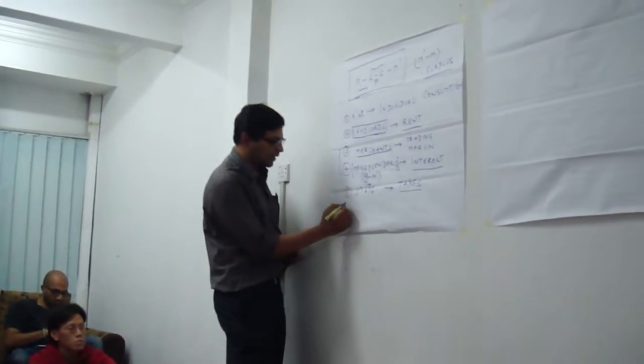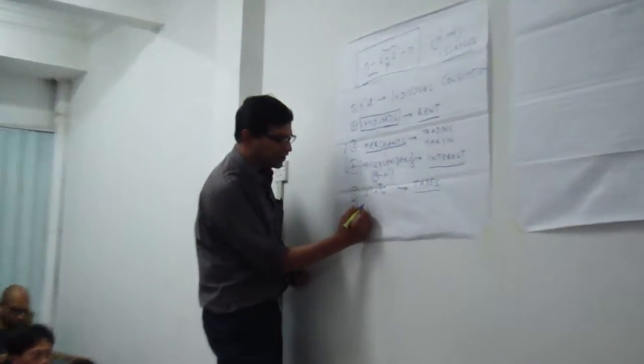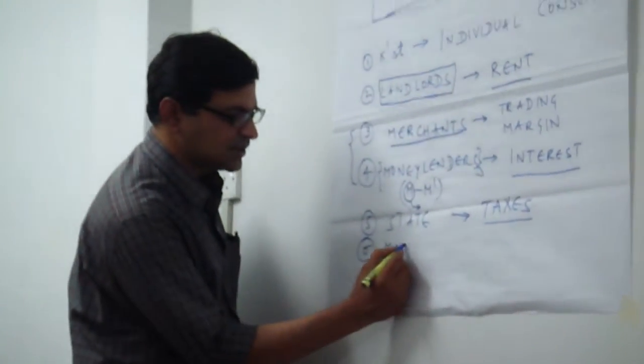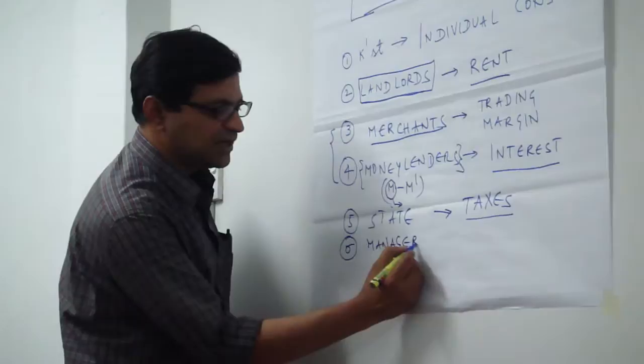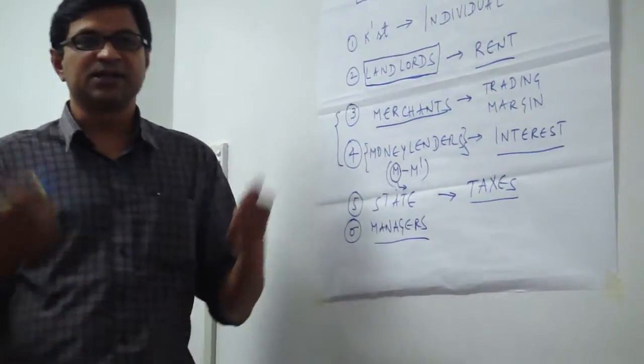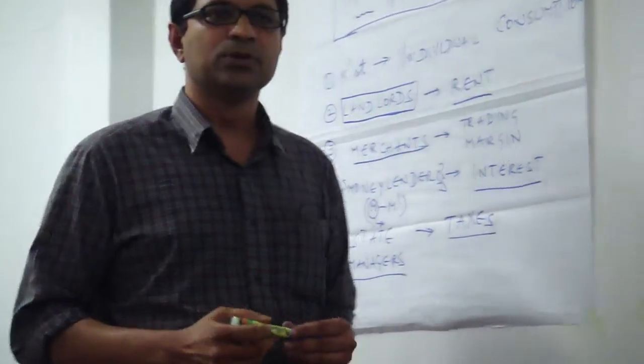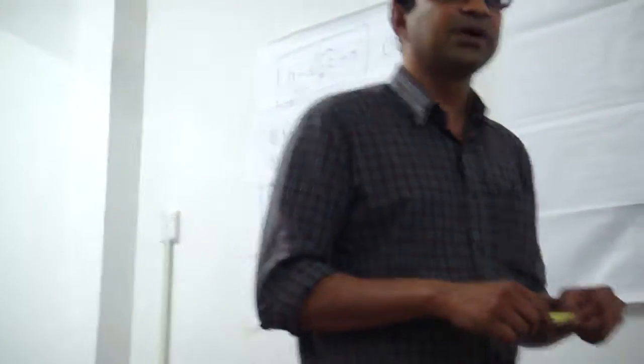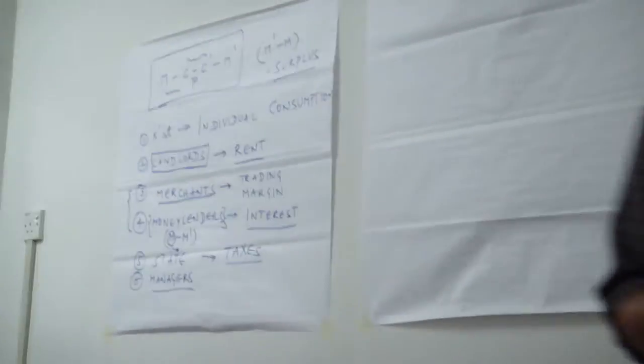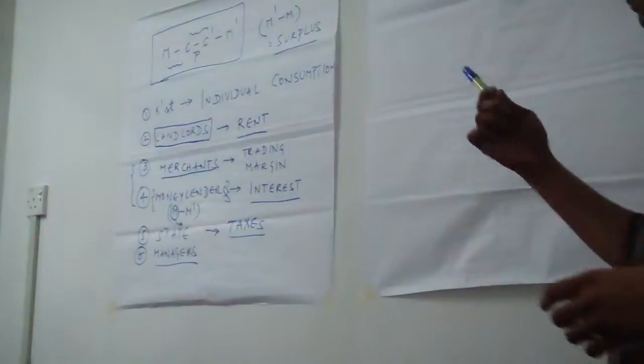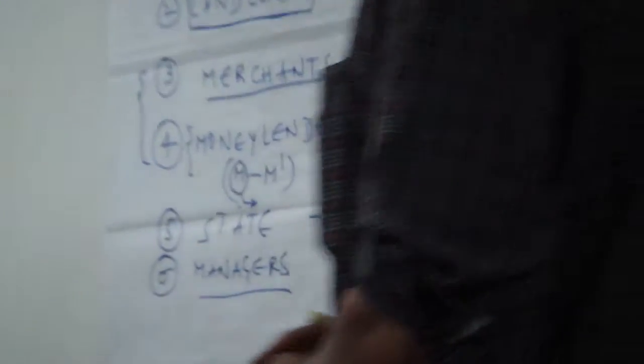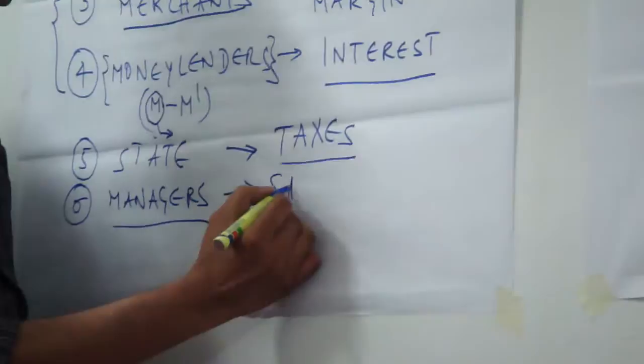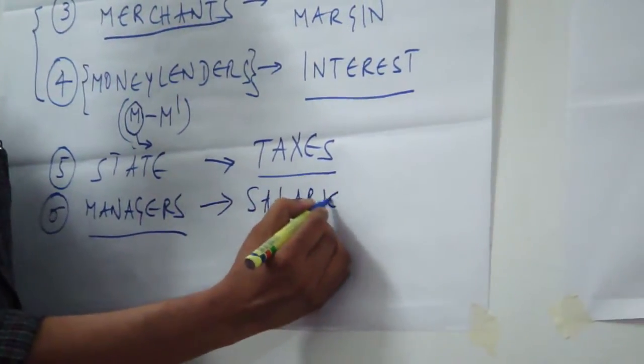So state extracts part of the surplus in the form of taxes. Who else? There are other groups who get shares. For instance, managers. An entire class of executives or managers. People who do MBAs and get into corporations as managers. They get part of the surplus in the form of compensation, executive compensation or salaries, whatever you want to call it.